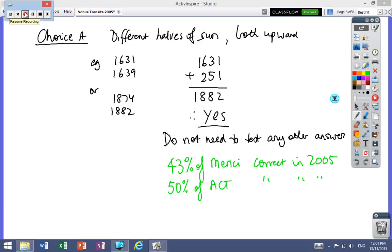In this particular one, you've got the information—different halves of the Sun, both upwards. For instance, 1631 and 1639—they're both going up, but one's on the top half and one's on the bottom half. If you add 251, you get 1882, which is one of the answers. So you don't need to test any other solution.